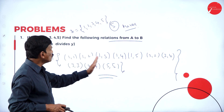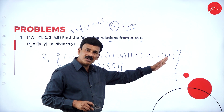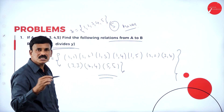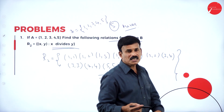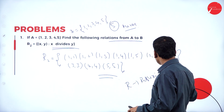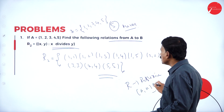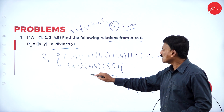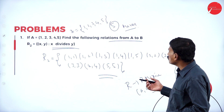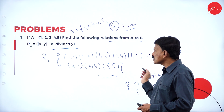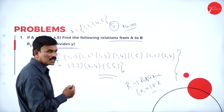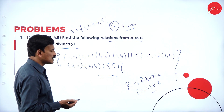From this relation, we can clearly say that R is a reflexive relation because (a, a) belongs to R — we have (1,1), (2,2), (3,3), (4,4), (5,5). However, it is not symmetric because (1,2) is there but (2,1) is not there; (1,3) is there but (3,1) is not there. This relation is reflexive but not symmetric.